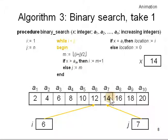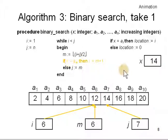Then you come back here. i less than j. Find the midpoint. And midpoint is 6. And x is 14, am is 12. x is more than am. So i moves to m plus 1 which is 7.